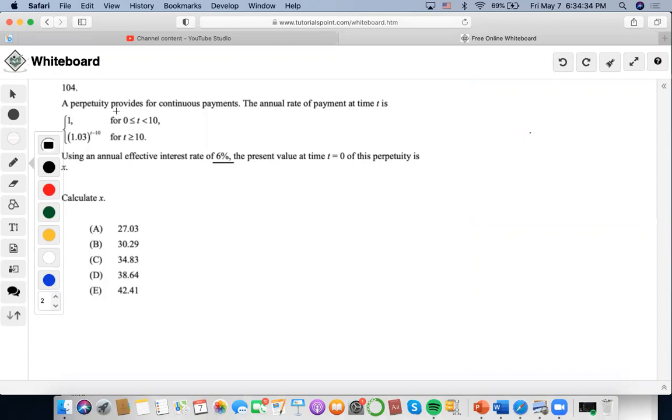So this whole framework that is given here represents one perpetuity that is equal to x. They're giving us some time limits for each of these payments. Let's start with this one because this one starts from 0 to 10. So payments of one are occurring first.